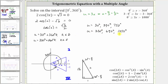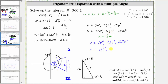We have six solutions in terms of u, but we need to solve in terms of x, where x equals one-third times u. Multiplying each angle by one-third: x equals one-third times 30° = 10°, one-third times 390° = 130°, one-third times 750° = 250°. And x equals one-third times 330° = 110°, one-third times 690° = 230°, and one-third times 1050° = 350°.